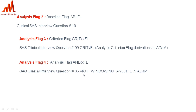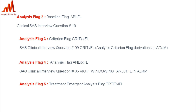Analysis Flag 5 is the Treatment Emergent Flag, generally used in the adverse events dataset. Adverse events occurring after taking the treatment are considered treatment emergent. In some cases, if an adverse event existed before treatment but worsened after treatment, those adverse events can also be considered treatment emergent.